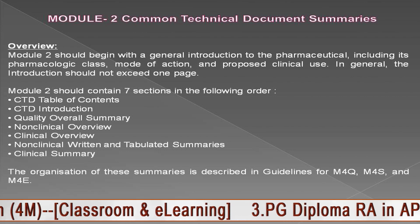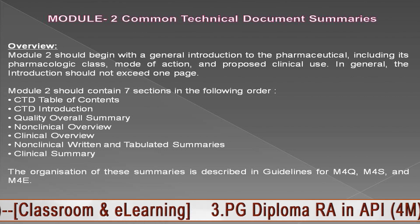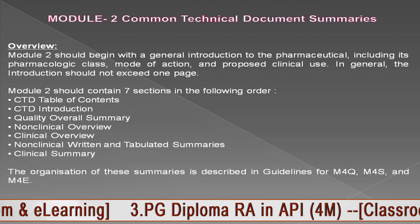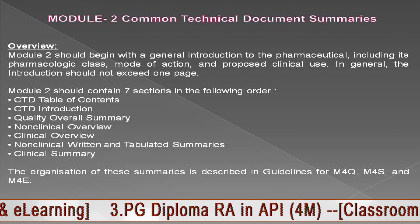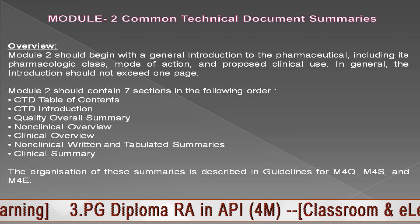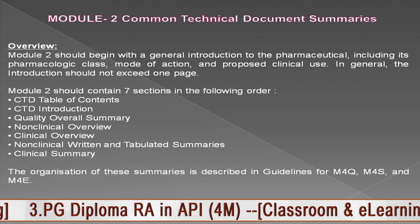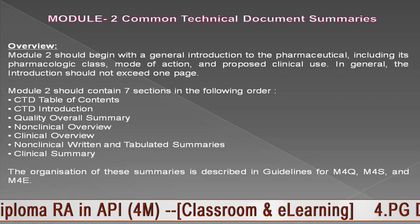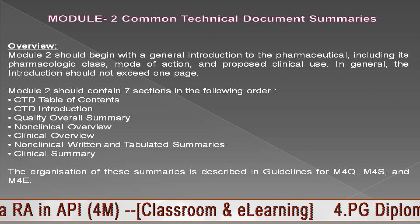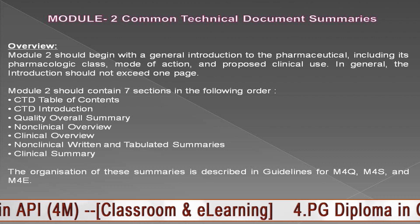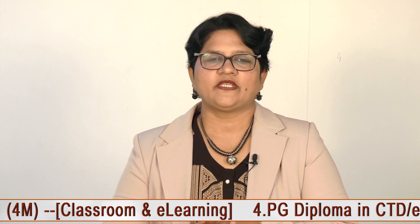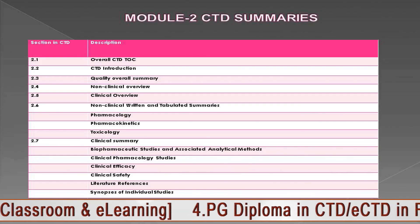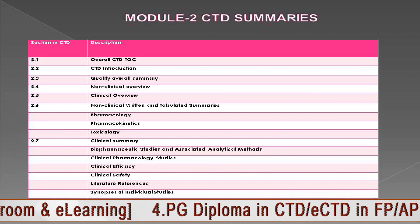Module 2 talks about the quality overall summary and has mainly seven sections: CTD table of contents, CTD introduction, quality overall summary, non-clinical overview, clinical overview, non-clinical written and tabulated summaries, and clinical summaries. This is the hierarchy which must be followed when compiling the dossier into Module 2.